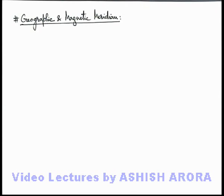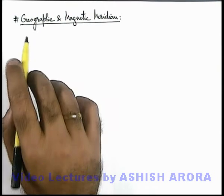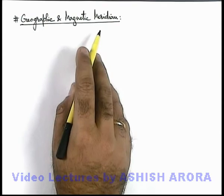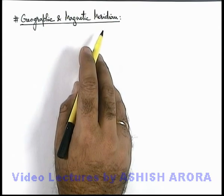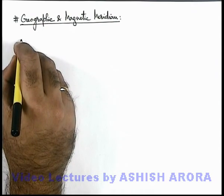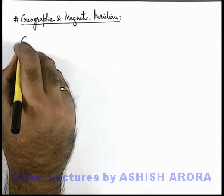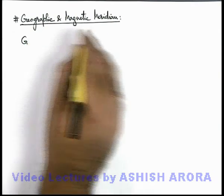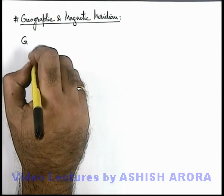Let us study 2 important terms in terrestrial magnetism, that is in the magnetic field of Earth. These are geographic meridian and magnetic meridian. Let us first write down about these 2 terms.